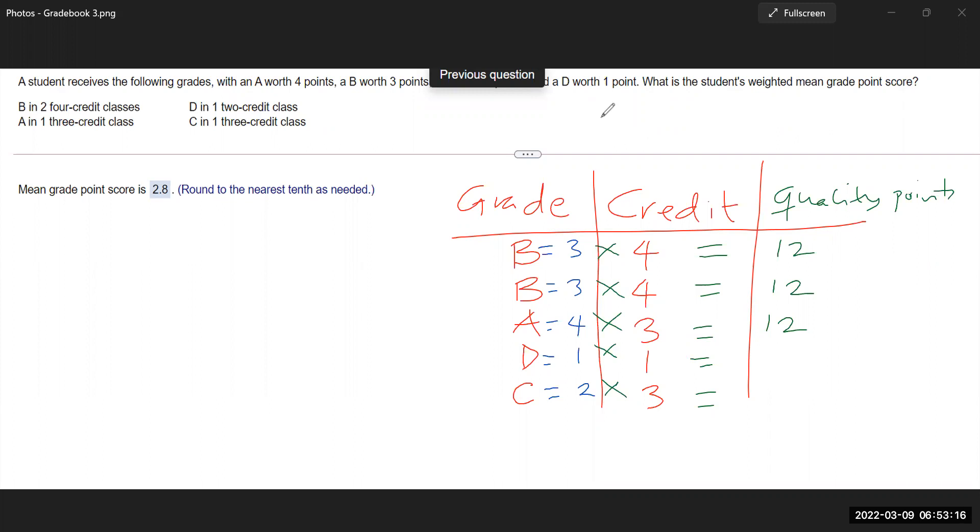And what do we have? A D. What do you get for D? It says D in one two credit. So the credit for that should have been two. So sorry about that. So that is two right there because it says D in one two credit. Good. And now we do two by three. That gives you six.